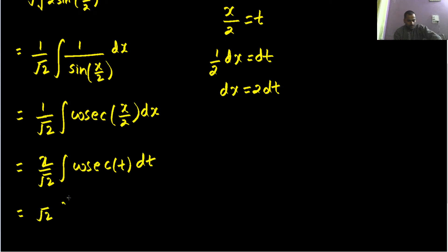And integration of cosecant t is log cosecant x and because here we have t. So log cosecant t minus cot t.